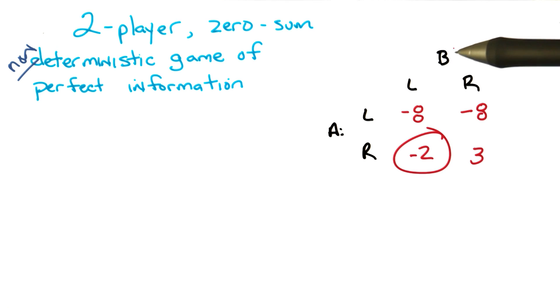And it makes sense the other way as well, right? That B would not ever choose to go right because then A would choose to go right as well. Gotcha. So you'll still end up here.